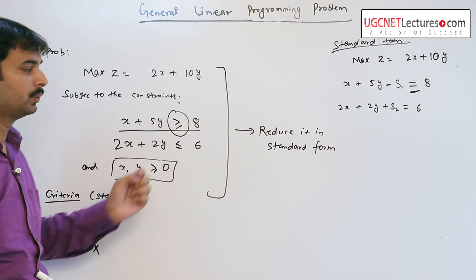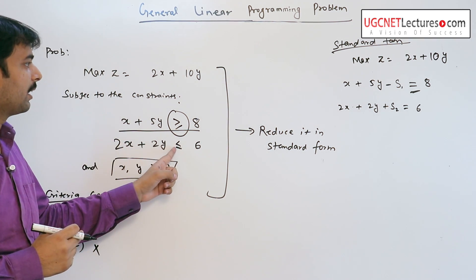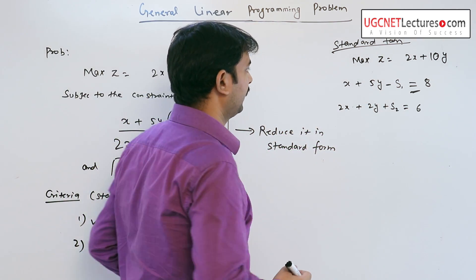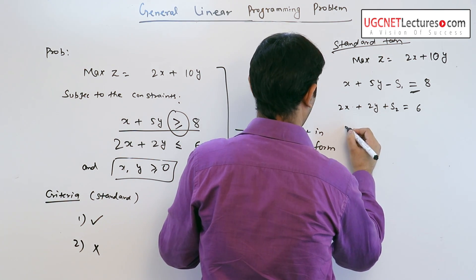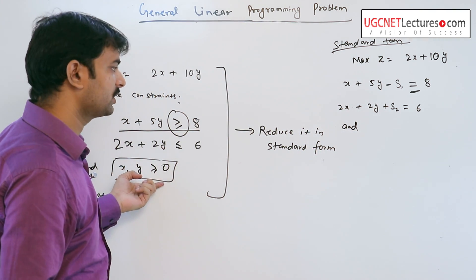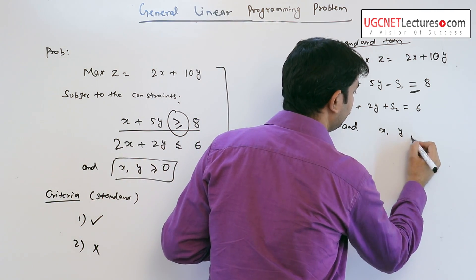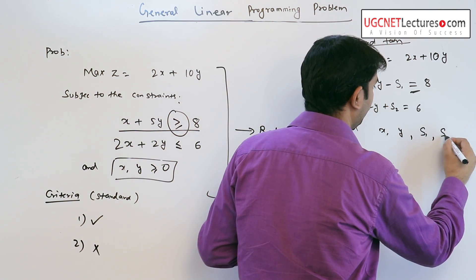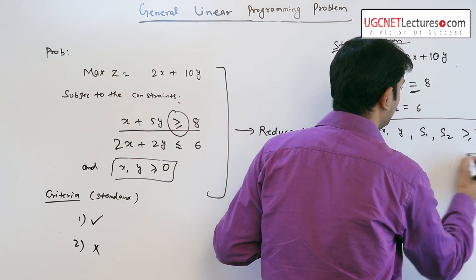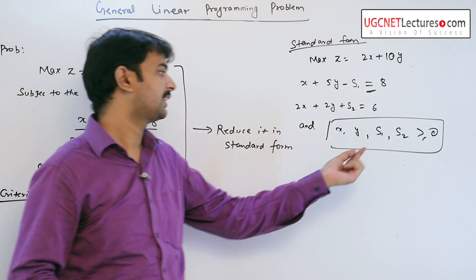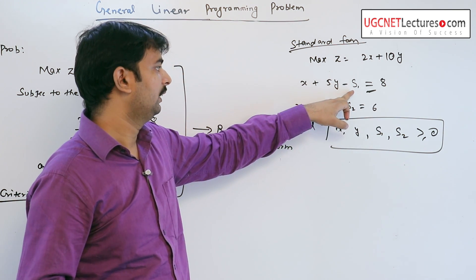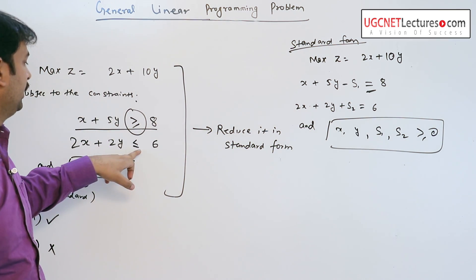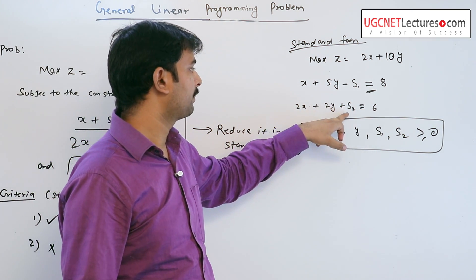The second constraint is less than or equal to, so we add a real number S2 on the left hand side, and the inequality sign changes to equality. All x and y variables are positive, and S1 and S2 are non-negative. So we introduce S1 and S2 as positive real numbers: x plus 5y minus S1 equal to 8, and x plus 2y plus S2 equal to 6.